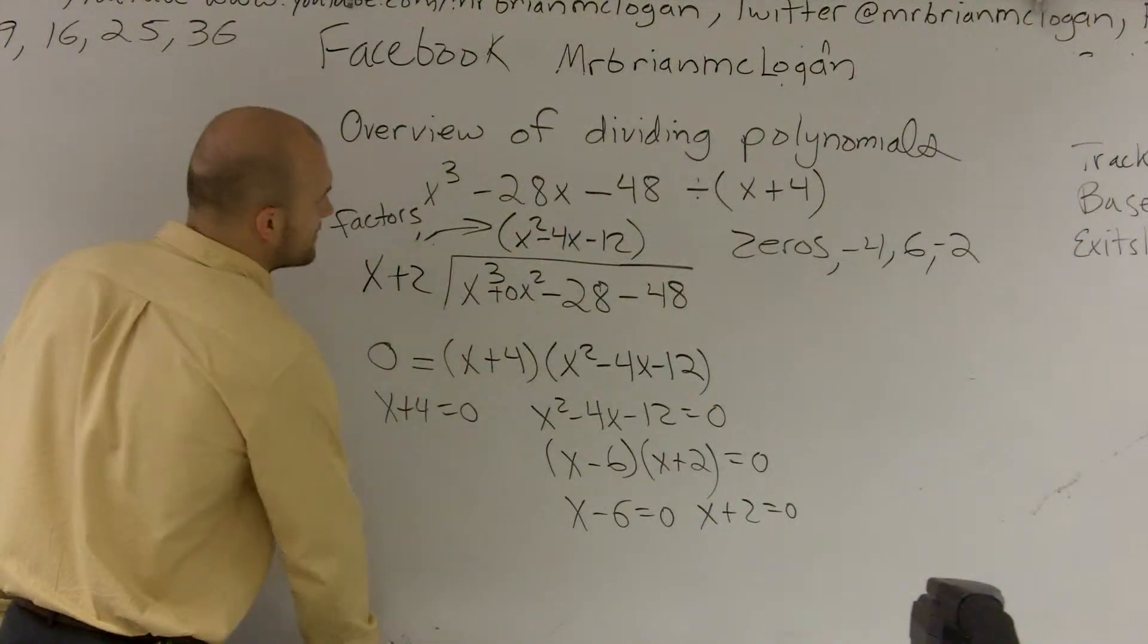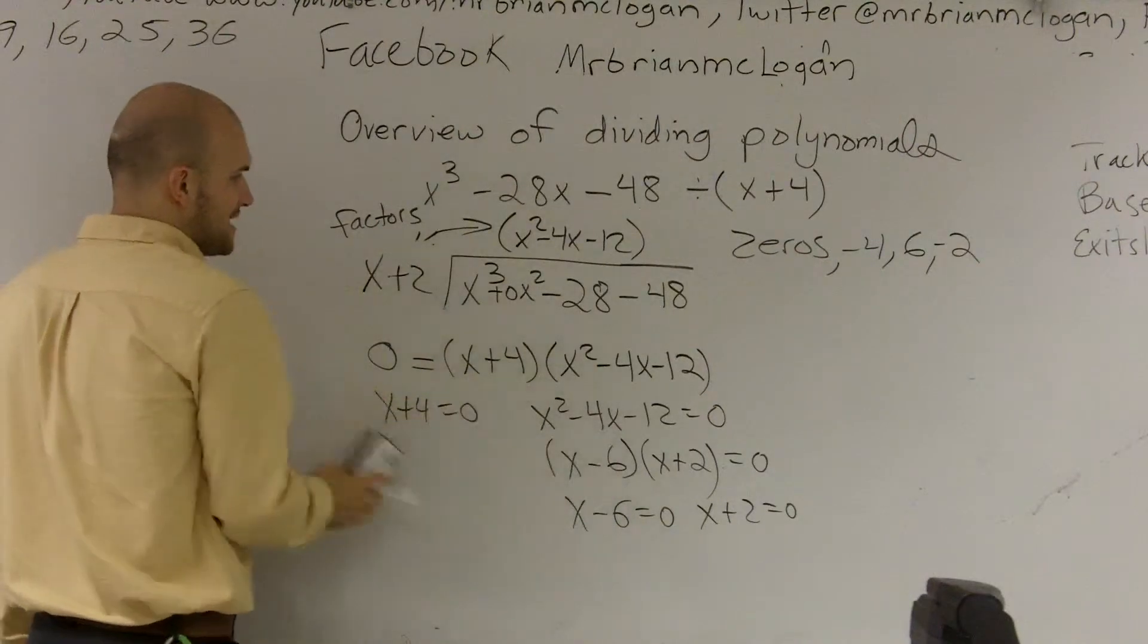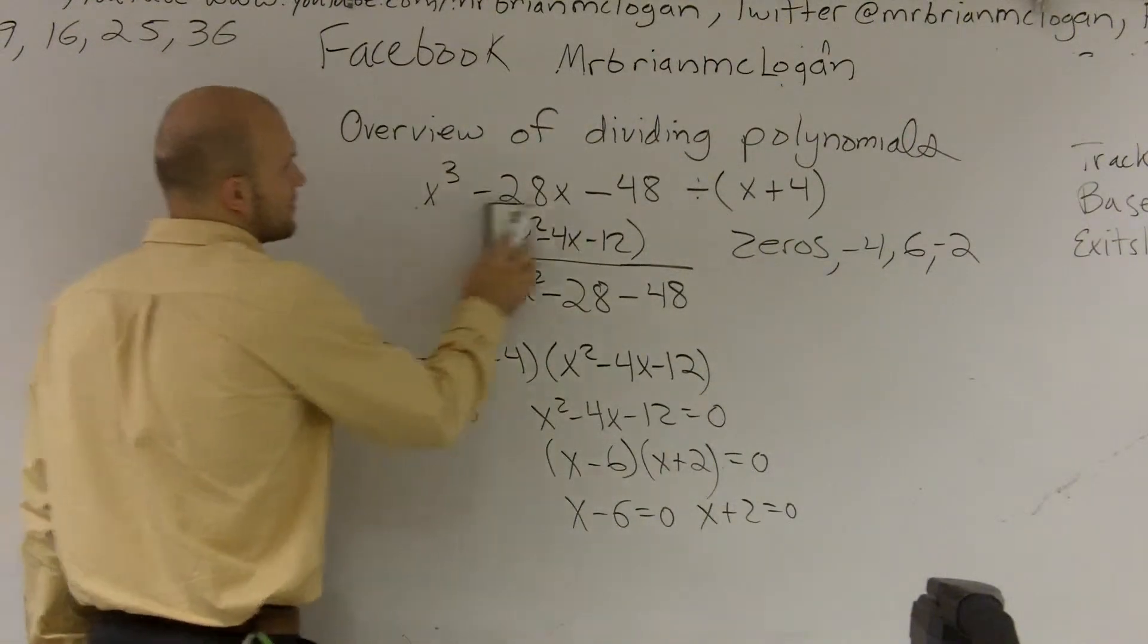That's another factor you could have divided into. You also could have divided x plus 2. And either way, you always would have gotten a different polynomial up there, but you still would have always gotten back your original zeros and factors.